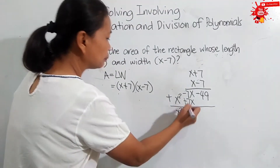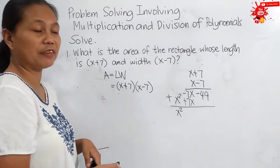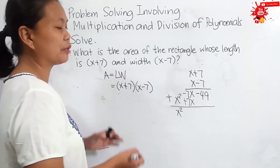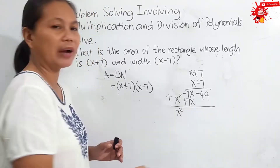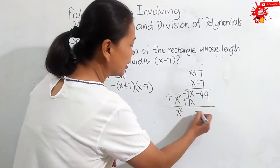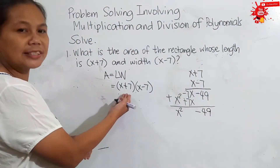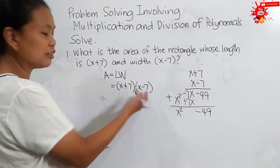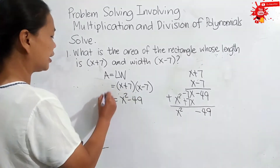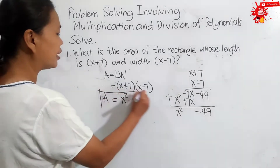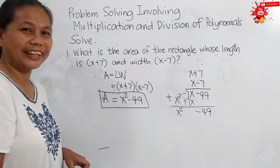We bring down x squared. Then, what is negative 7x plus positive 7x? We are adding opposite terms, so their sum is 0 — no need to write 0. We just bring down negative 49. Therefore, the product of x plus 7 and x minus 7 is equal to x squared minus 49. So, the area of the rectangle is equal to x squared minus 49.